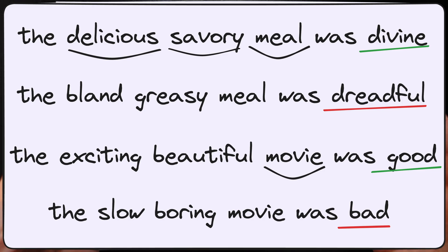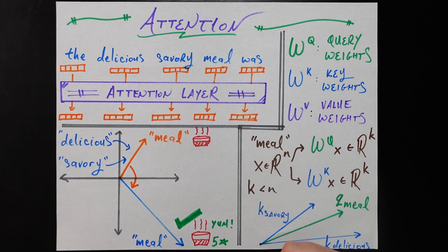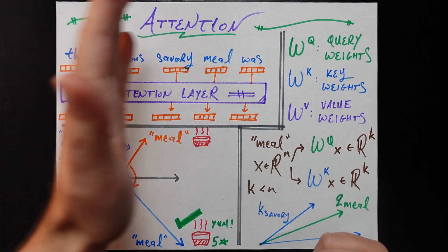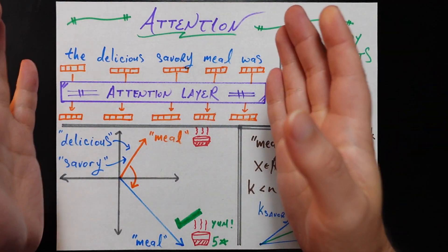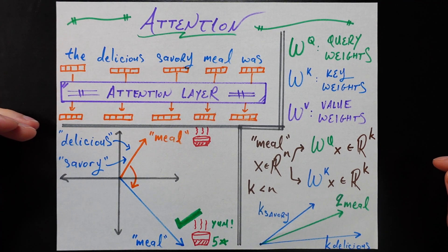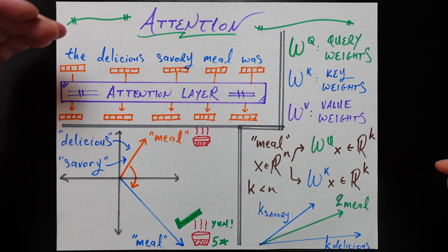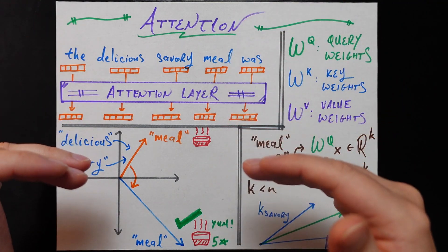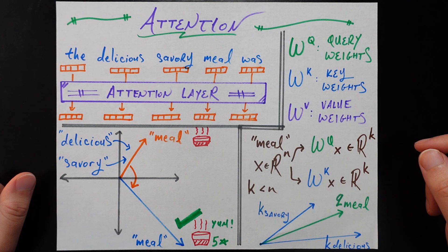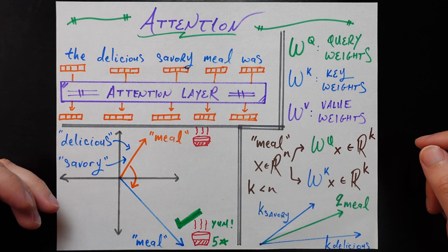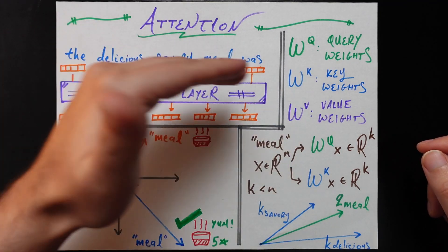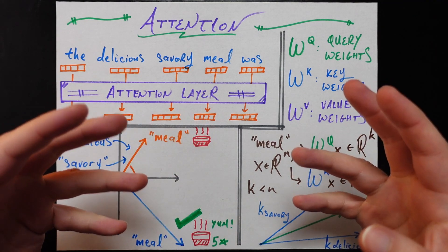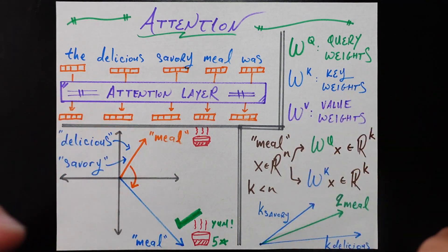Let's take a look at how an attention layer is going to achieve that goal. At a very high level, an attention layer accepts a set of n vectors — in this case the five embeddings corresponding to the five words that occur before the word we're trying to predict. It also outputs a set of n vectors, each corresponding to the words that we inputted. What's happening between this input and output is exactly the secret sauce. The goal of an attention layer is to pass information between the input vectors such that the output vector for a token, for example 'meal,' has absorbed all the information from semantically related input vectors.